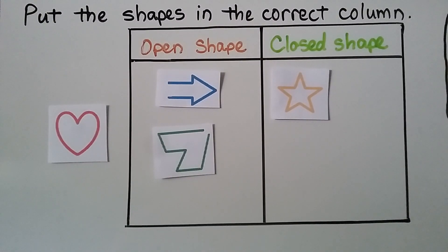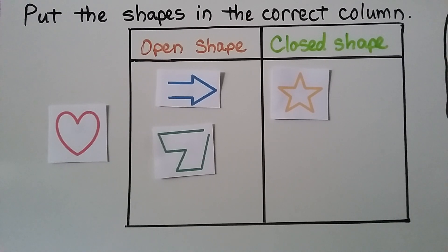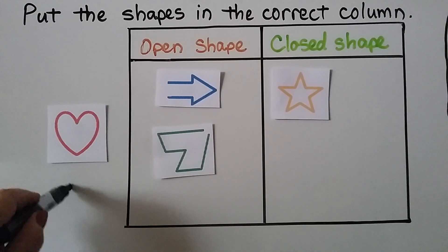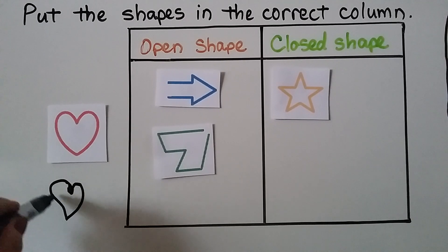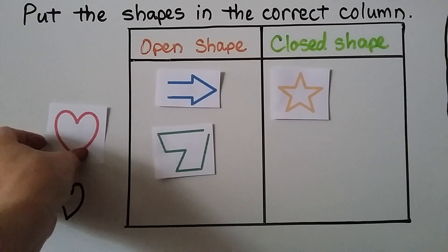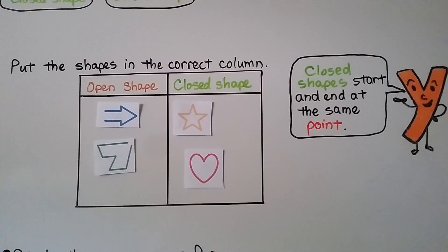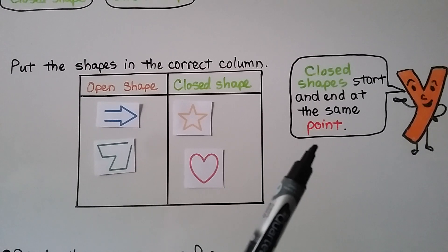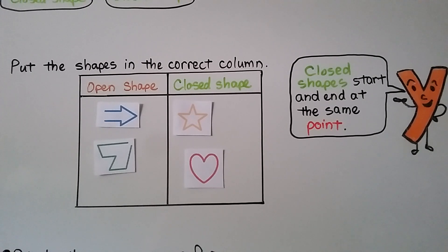What about the heart? Is that open or closed? Do you see any breaks or openings around the red line? If we started here and went around and stopped at the same point, yeah — that's a closed shape. It started and ended at one point. So just remember: closed shapes start and end at the same point, and open shapes don't.